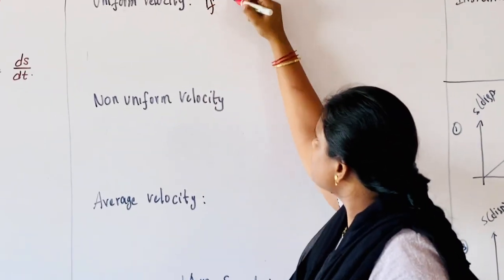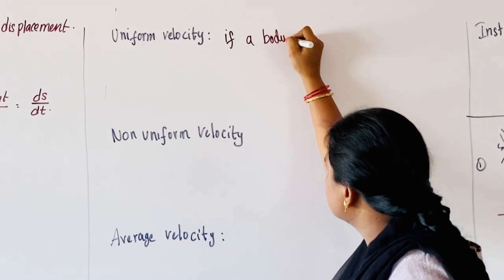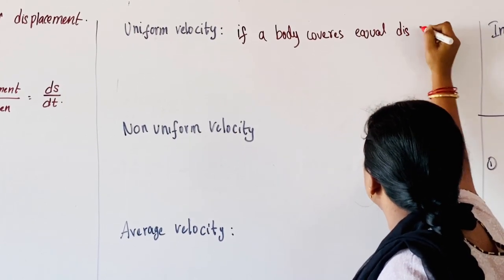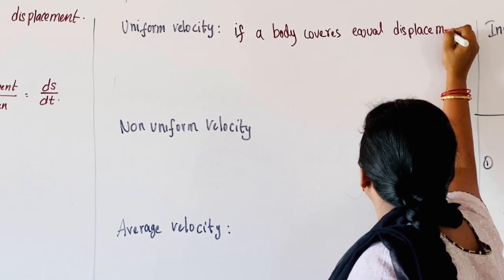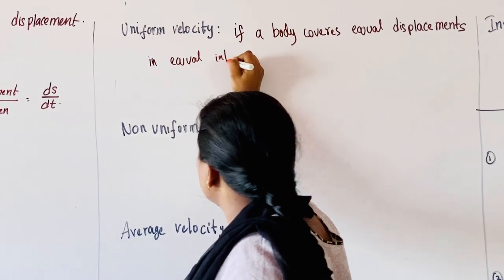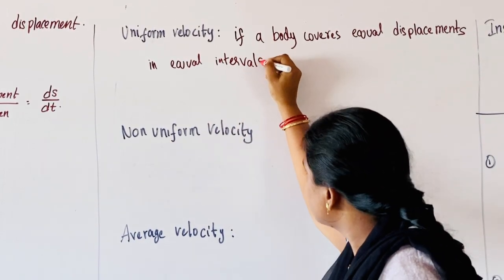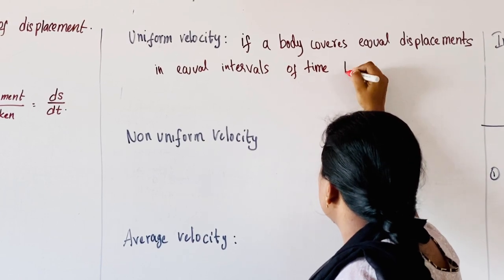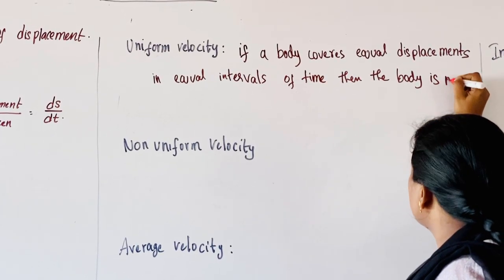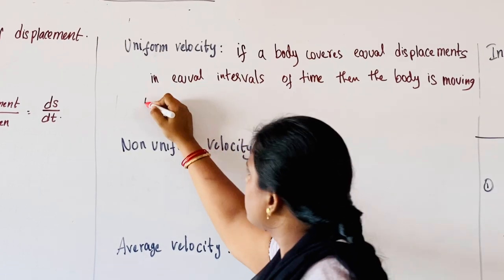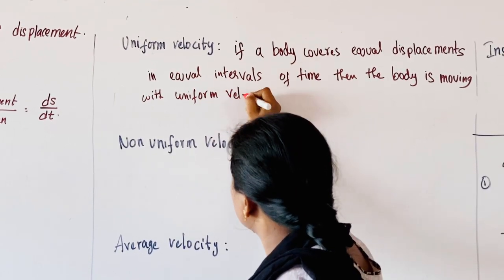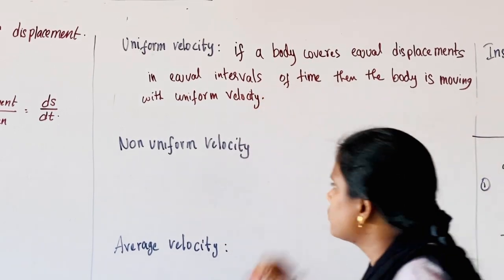If a body covers equal displacements in equal intervals of time, then the body is moving with uniform velocity.